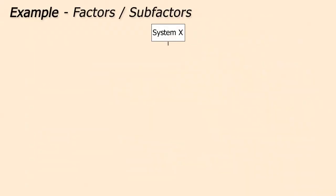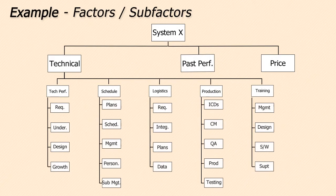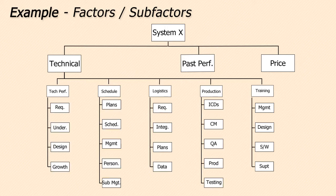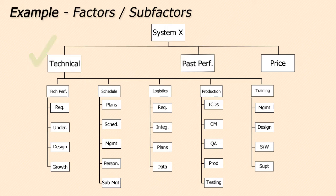Let's look at an example to illustrate why more is not better. In this example, three evaluation factors have been identified for the acquisition of System X: technical, past performance, and price. Under the technical factor, five sub-factors have been identified. And under each of those five sub-factors, numerous elements have also been identified. This evaluation team thinks they are doing a good job in being very thorough in their selection of evaluation factors. But let's see what happens when we look at some potential results on the next two slides.